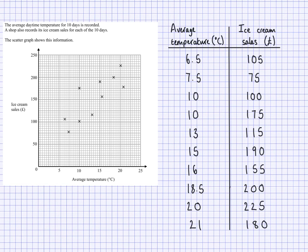What I have here is a scatter graph, and these points — the information from these points — I've just put them into a table here. The context is the average daytime temperature for 10 days is recorded and that's being placed on the x-axis. A shop also records ice cream sales for each of the 10 days and that's being placed on the y-axis. And this information, these crosses, I've got them all here in the table as well.